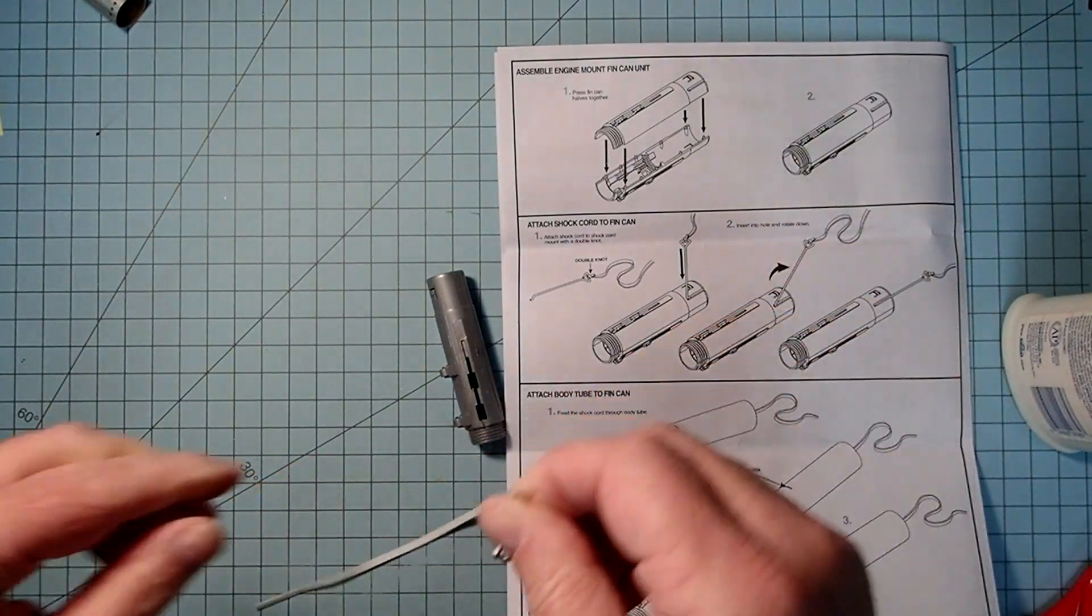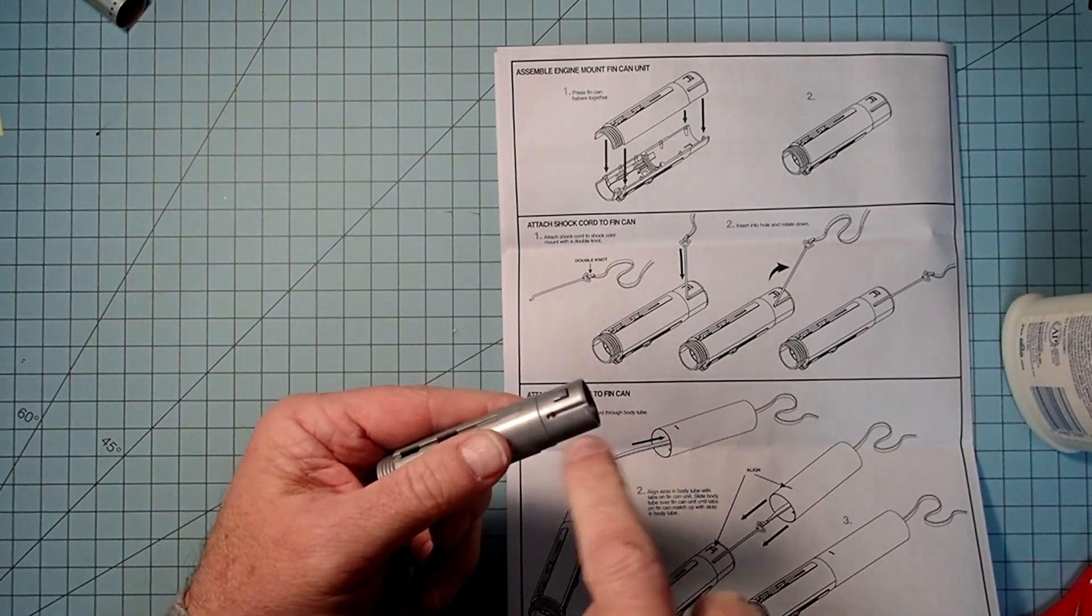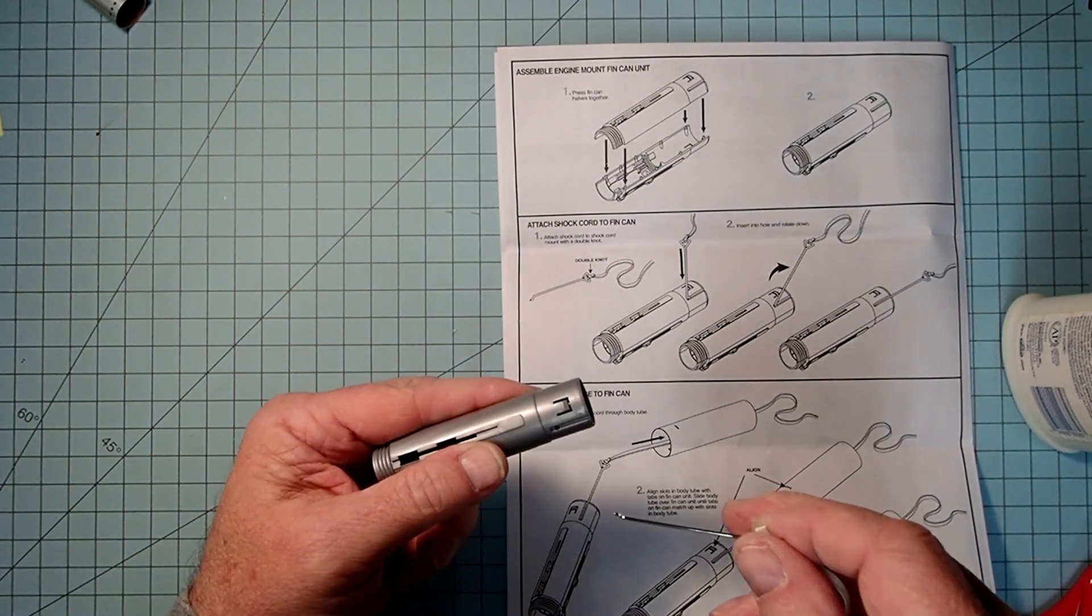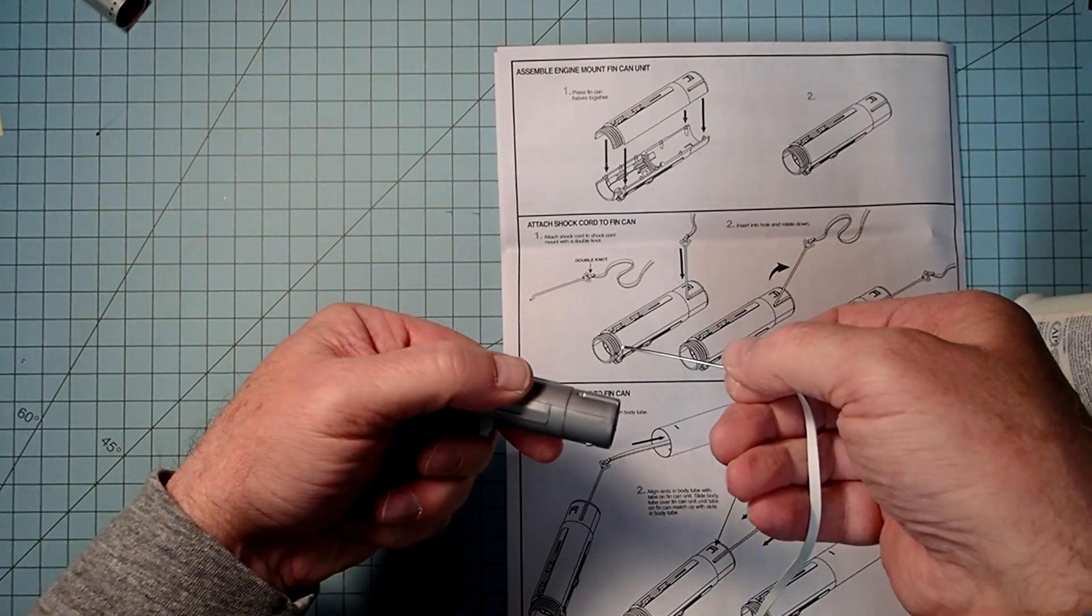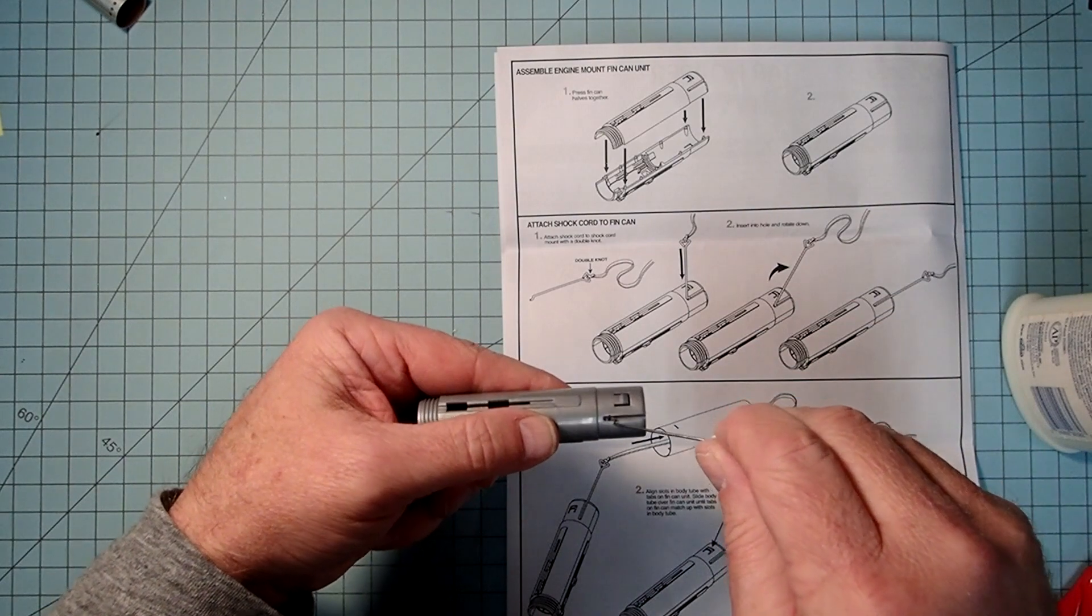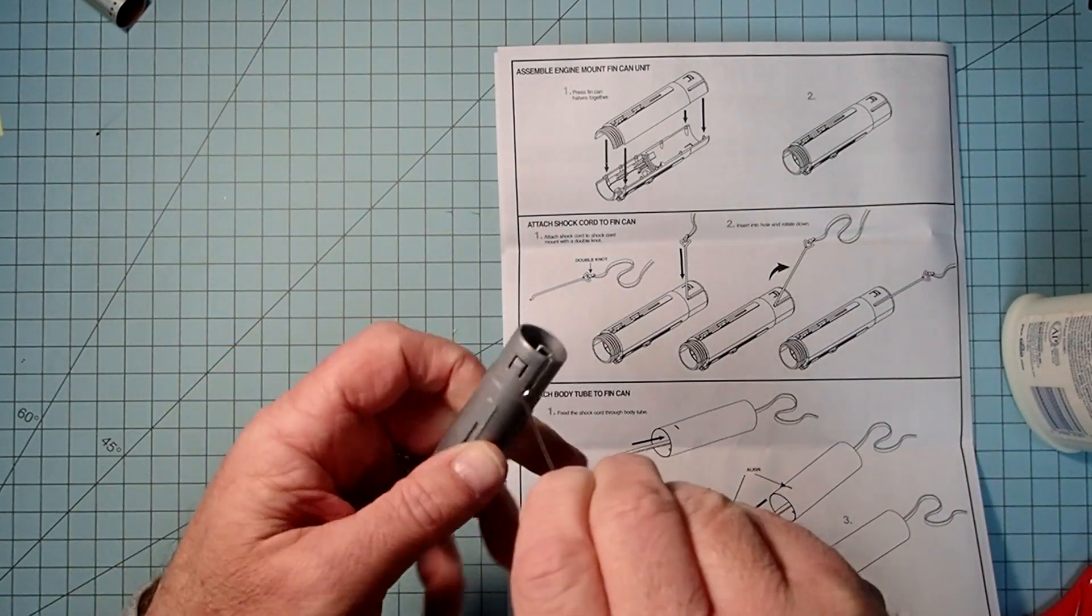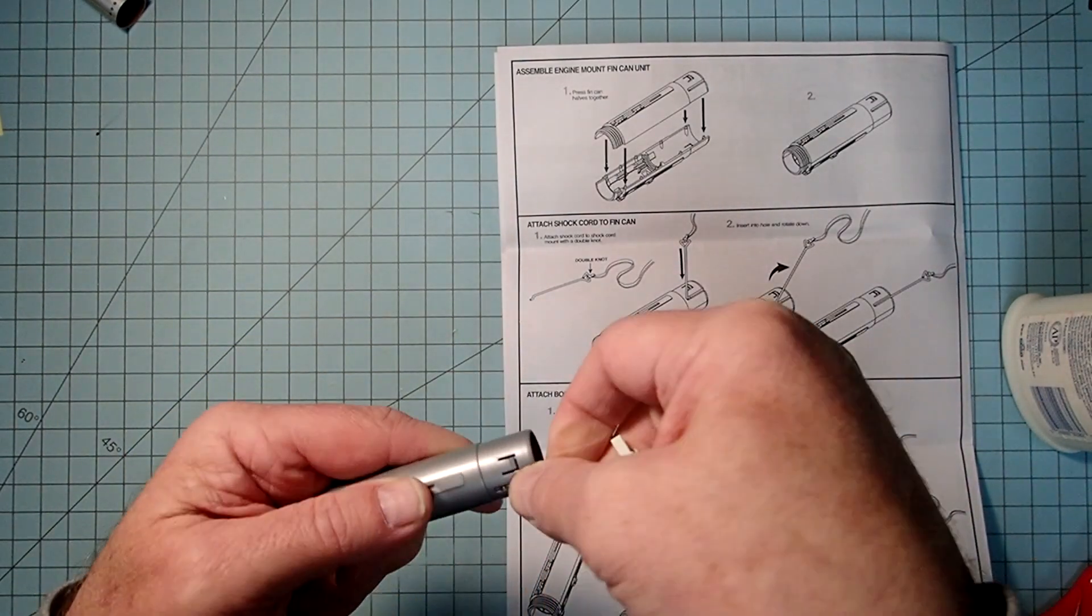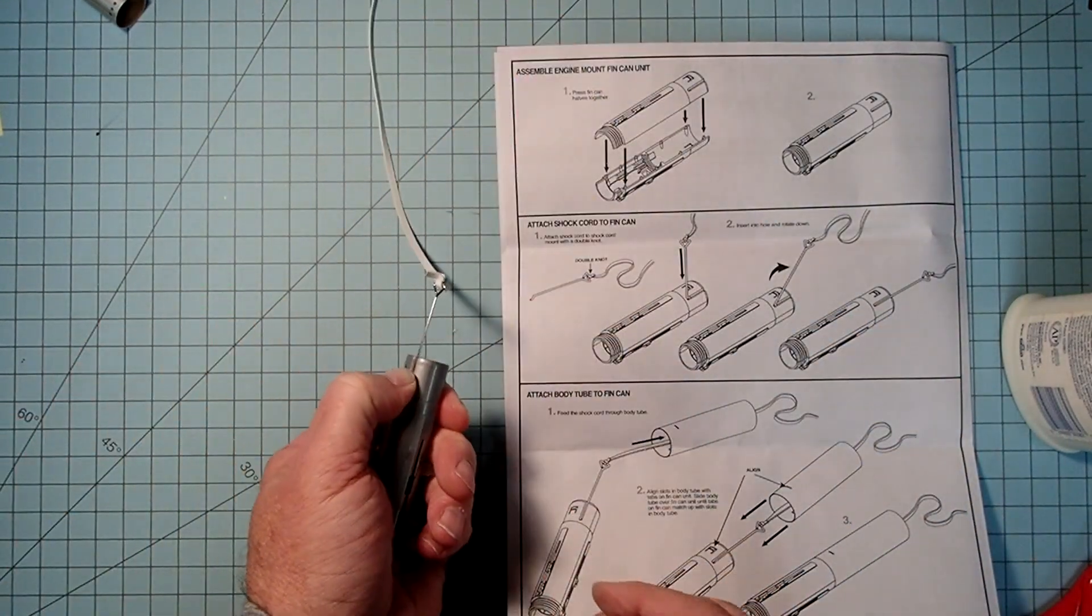Now this is going to go into this slot here. So down at the bottom of the slot there's a little hole. So I'm going to stick that in there and then put it through the hole. The hole's actually offset to one side just a little bit. So it should look like this.